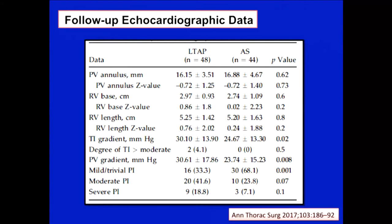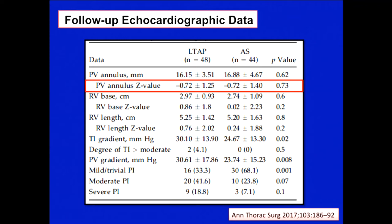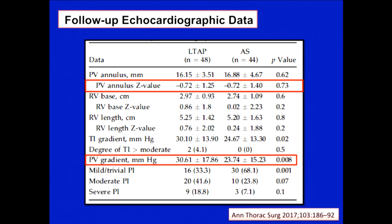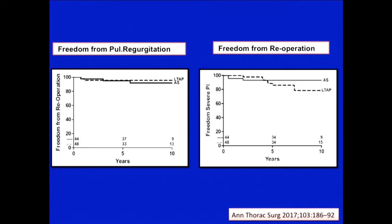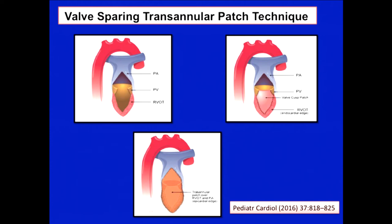In their data, looking at follow-up echocardiograms comparing the limited transannular patch technique to a non-transannular patch — where they performed a ventriculotomy preserving the valve — patients who had the limited transannular patch showed that though the valve size was initially small, it tended to grow over time. Those patients also had a higher gradient across the pulmonary valve rather than pulmonary regurgitation. Progression of pulmonary regurgitation was not much different between the two groups. Though re-operation rates were higher in the limited transannular patch group, the intervention was for catheter-based stenosis, not pulmonary regurgitation — making this another viable alternative using synthetic material.